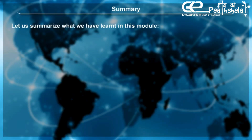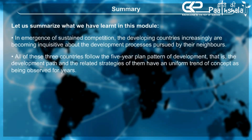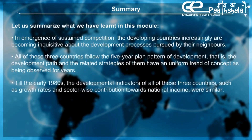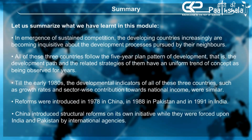Summary. Developing countries are increasingly becoming inquisitive about the development processes pursued by their neighbors. All three countries — China, India, and Pakistan — follow the five-year plan pattern of development with a broadly uniform trend of concept. Till the early 1980s, developmental indicators such as growth rate and sector-wise contribution towards national income were similar among them. Reforms were introduced in 1978 in China, 1988 in Pakistan, and 1991 in India. China introduced structural reforms on its own initiative, while they were forced upon India and Pakistan by international agencies.